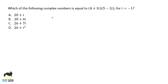Let's look at a few more example problems. Which of the following complex numbers is equal to four plus three i times five minus two i, where i equals the square root of negative one? We want to start by combining like terms, and looking at the answer choices, we can see each is a single term like 20 plus i or 20 plus six i, with no parentheses. That tells us we'll need to combine terms. Let's FOIL this — first, outer, inner, last — when we have two terms being multiplied.